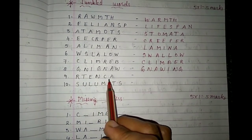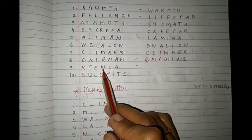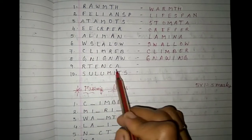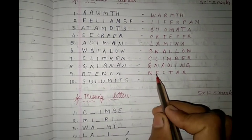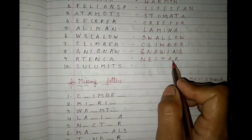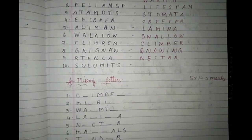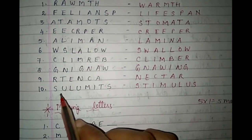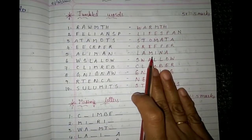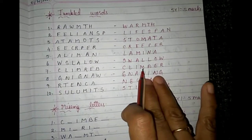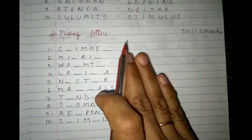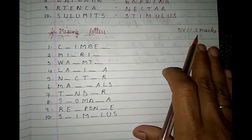Ninth one: R-T-E-N-C-A. The answer is N-E-C-T-A-R — nectar. And the tenth one: S-T-I-M-U-L-U-S — stimulus.